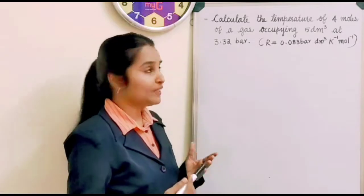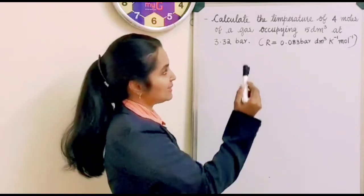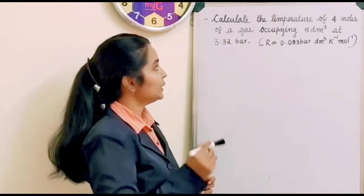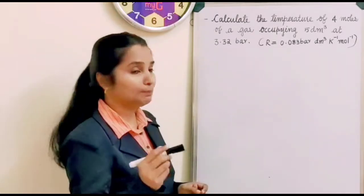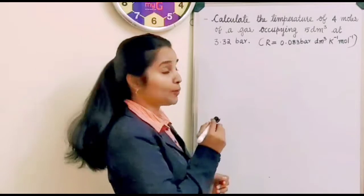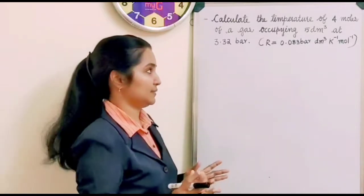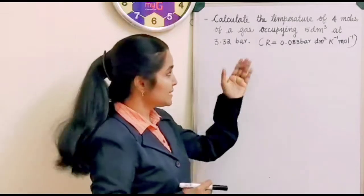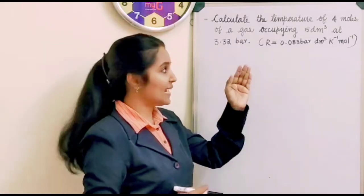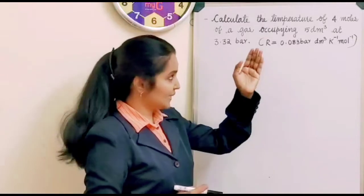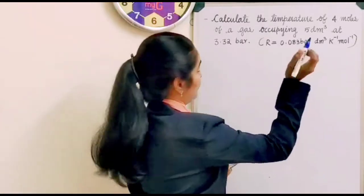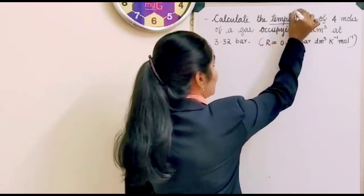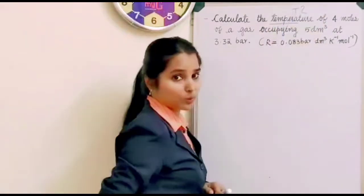I will read the problem very well. Calculate the temperature of 4 moles of a gas occupying 5 dm³ at 3.32 bar. And the value is given. R is equal to 0.083 bar dm³ K⁻¹ mol⁻¹. Calculate the temperature. So we have to find out the temperature.